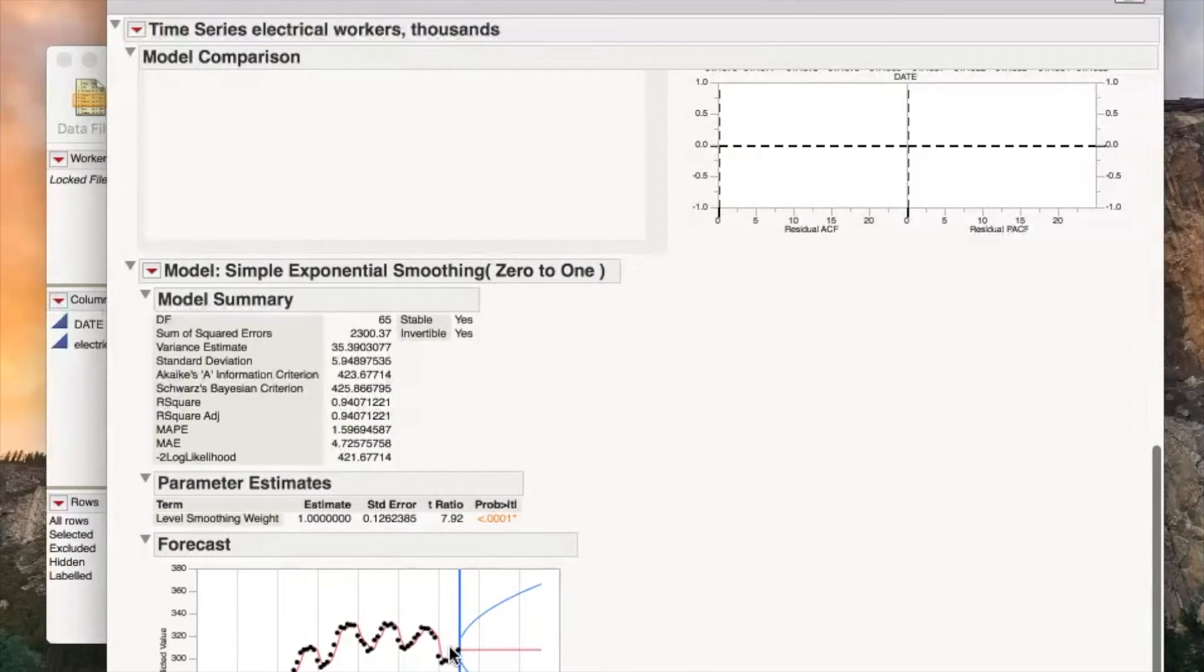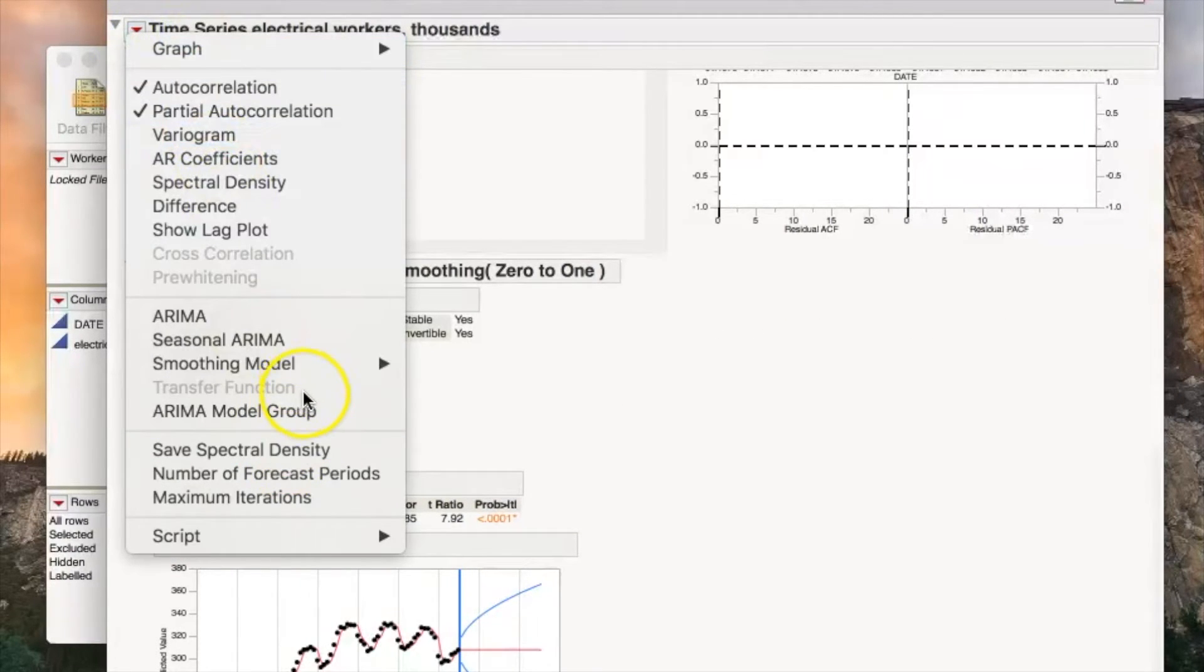Seeing as though this model did not seem to be the best fit, we chose Seasonal Exponential Smoothing that will transform the data assuming that there was seasonality.